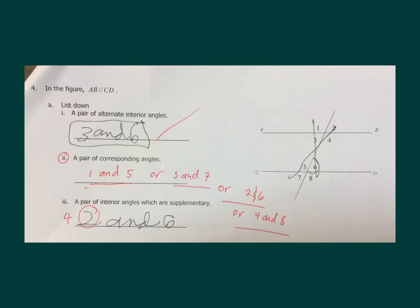Corresponding angles have the same measure and they lie on the same side. If you look at the diagram, you have the parallel lines and the transversal line, which basically divides the plane into two regions — the one on the left and the one on the right. So corresponding angles are on the same side, meaning in the same area.